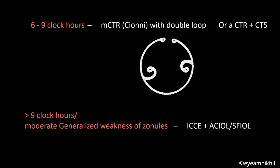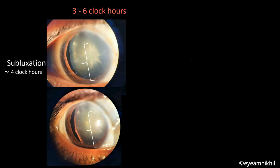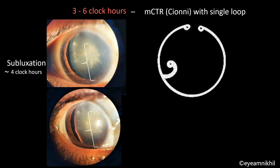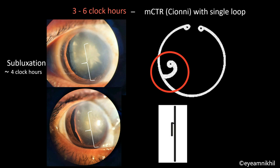This patient had a subluxation between 3 to 6 o'clock hours. So the plan was to use a modified CTR with single loop, also known as the SIONI ring, named after Dr. Robert SIONI, who modified the CTR by adding a fixation hook that loops 0.25 mm anteriorly from the body of CTR so that it stays above the capsular margin. The free end of the hook has an eyelet through which a suture can be passed for scleral fixation.